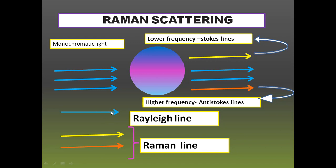The Rayleigh lines have the same frequency as the incident radiation, while Raman lines possess frequencies different from the incident radiation. For Stokes lines, the frequency is lower than the incident frequency. For anti-Stokes lines, the frequency is higher than the incident frequency. Depending on the frequency or wavelength, the lines are categorized into two types: Stokes lines and anti-Stokes lines.